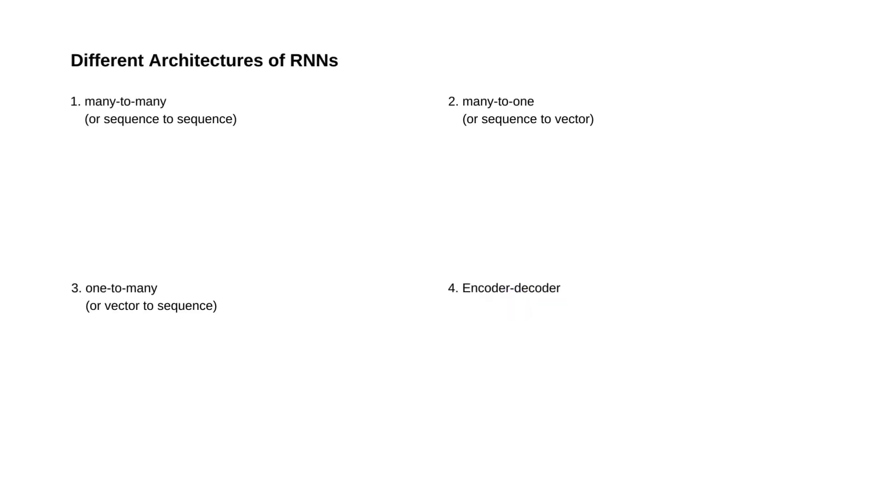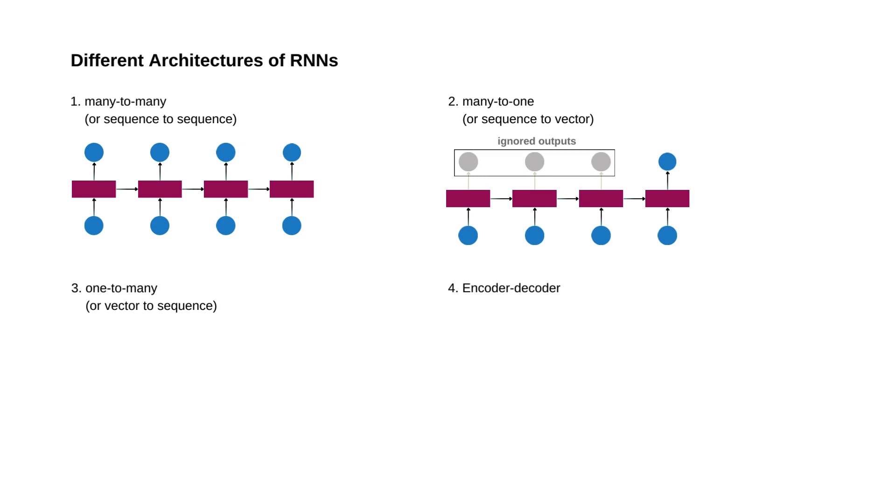The architecture of RNN can vary according to the need. First, there is many-to-many, or sequence-to-sequence RNN, where an input is given and output is produced at each time step. This can be used for forecasting, like predicting stock prices. Next, there is many-to-one, or sequence-to-vector. In this, inputs are given at each time step, but only one output is considered, and other outputs are ignored. This type of RNN can be used in sentiment analysis for tagging whether a sentence is positive or not.